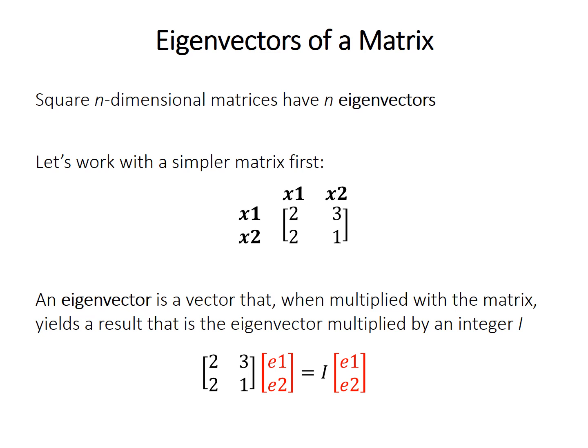The next building block is something called an eigenvector. Square n-dimensional matrices have n eigenvectors. So this 2 by 2 matrix will have two eigenvectors. An eigenvector is defined as a vector that, when multiplied by a matrix, yields a result that is the eigenvector itself multiplied by some integer, which we'll call i.